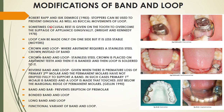Modifications of band and loop: the first modification by Robert and Isaac uses stoppers to prevent gingival and buccal movement of the loop. An occlusal rest can also be given on the tooth to overcome gingival slippage, as described by Wright and Kennedy in 1978. The loop can also be made on only one side, though this is less stable.